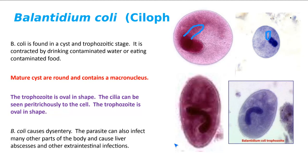The cysts are perfectly round and the trophs are oval in shape. You can see the cilia if you look closely — the fuzzy edges. But more importantly, it's the macronucleus. If you hear the word macronucleus from me, it's going to be Balantidium coli. What does it cause? Dysentery — because of the background.